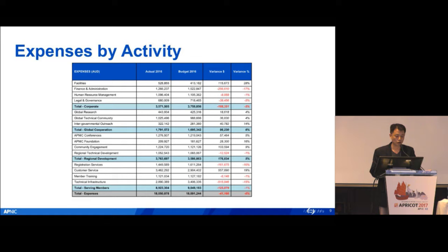Here is also a breakdown into the four categories: corporate expense, global cooperation, regional development, and serving members in detail. If you want to see the detailed financial report, you can go to the APNIC transparency page where all the detailed financial reports are listed.